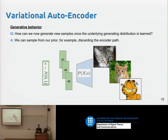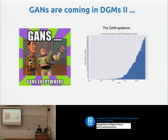You can get rid of the encoder, and assuming it did a good job, your prior distribution has information on how your image data looks like, so you can sample from the simple prior and get images. This was how Variational Autoencoders worked, and now GANs come to play with their explosion and revolution.